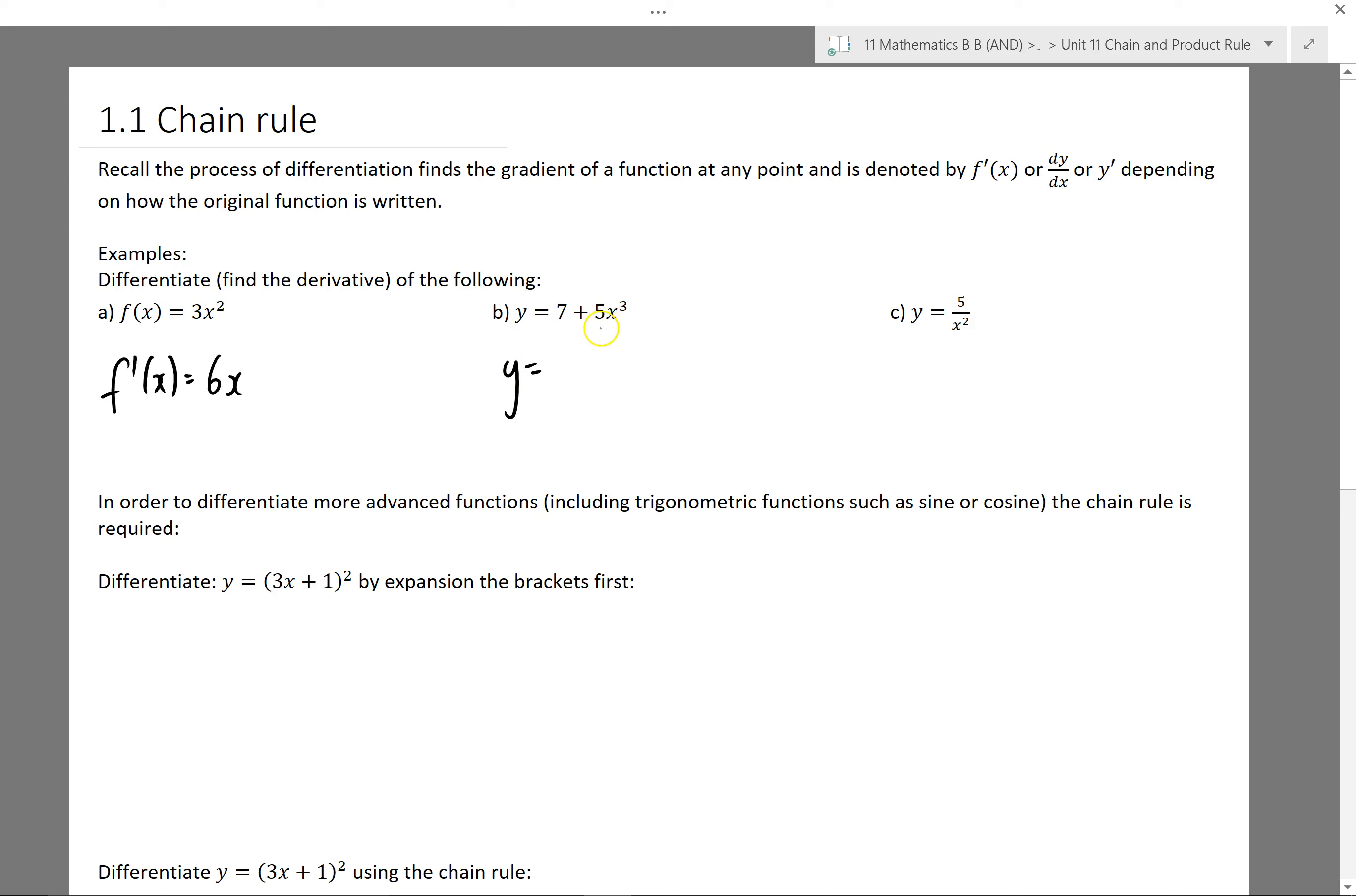Differentiating number B, multiply 3 and 5 together, 15, reduce the power by 1.